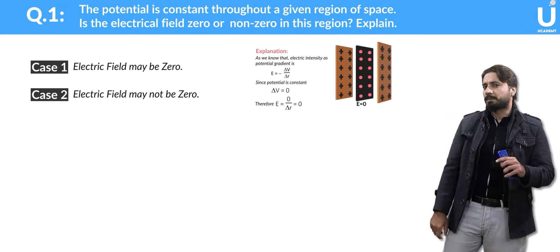So the answer to this question is: the electric field may or may not be zero. There are two cases. In case 1, there were equal and like charges. In case 2, there were equal and unlike charges. With this, you can answer the question correctly.